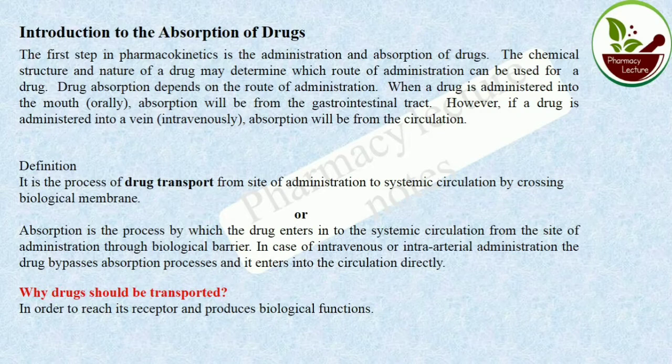If the drug is administered into a vein, absorption will be directly from the circulation. The definition of drug absorption: it is the process of drug transport from the site of administration to the systemic circulation by crossing the biological membrane.